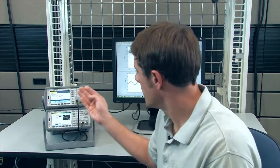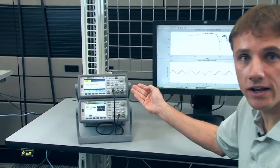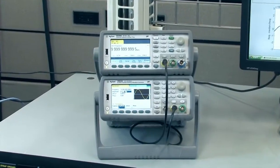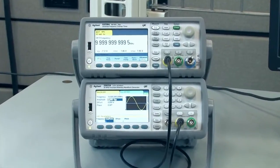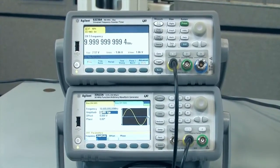So if I move over here I have the 53-230A here on top and I have it connected to a function generator which is outputting a 10 megahertz sine wave.